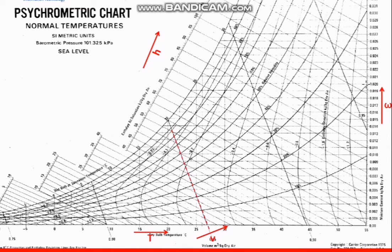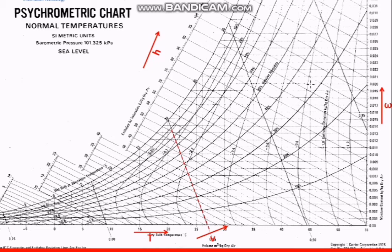We look at 0.02 on the humidity ratio axis and then go up to 45 degrees Celsius on the dry bulb temperature axis to locate our point. To find the enthalpy at that point, we follow the enthalpy line — reading off approximately 116 kilojoules per kg dry air.